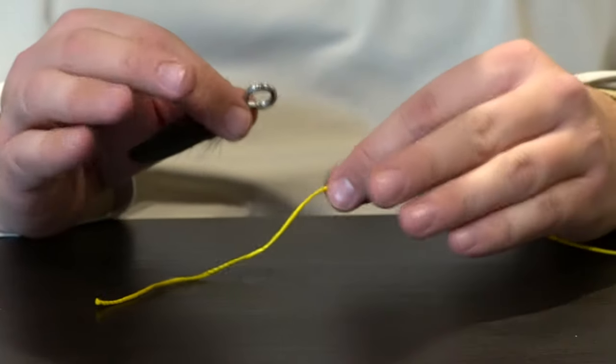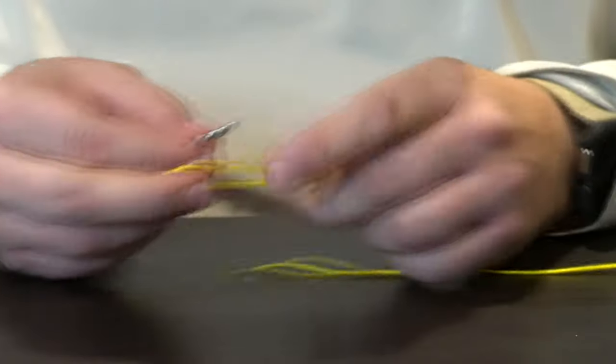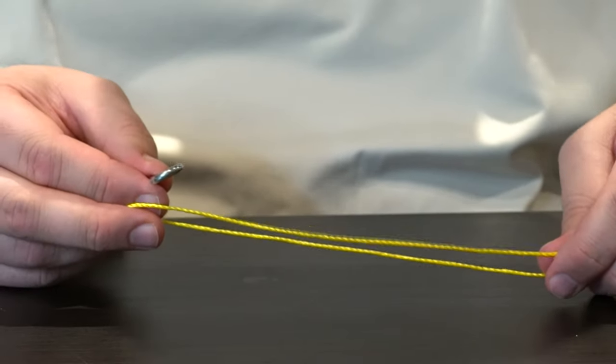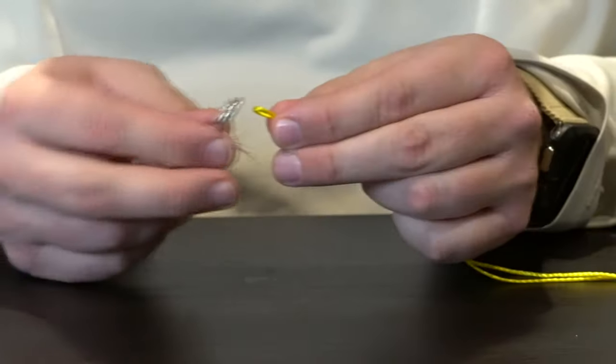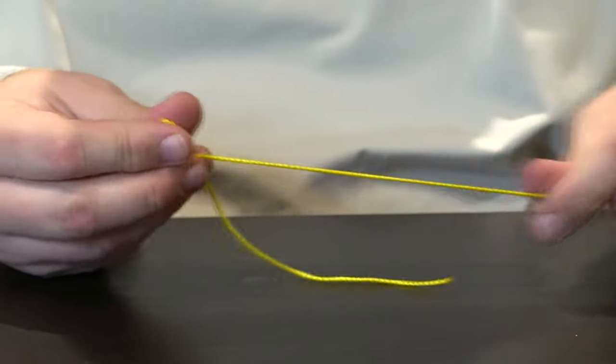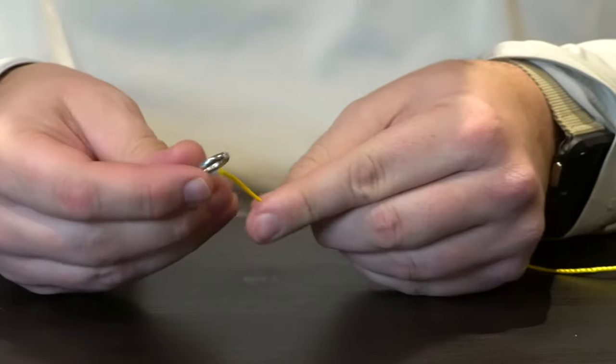Specifically for hook sets, it's a really good knot to have in your quiver. I'm going to double over my line here and thread that through my hook eye. If you don't have a lot of room in the hook eye, you can also just thread it through, pull a bunch of line out, and thread it back through this way.